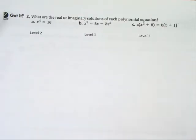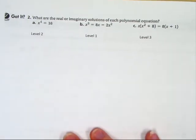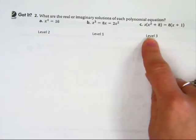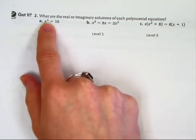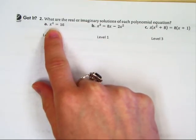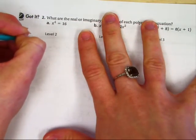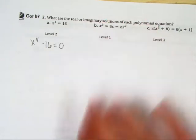And problem got it, number 2. Again, we've got to do the real or the imaginary solutions of the polynomial equation. It's not much different. I have put on different levels. No doubt that part C is the hardest of all of them. So let's start with the level 2. x⁴ equals 16. What we need to do is set it equal to 0. So we're going to take that 16 over, and we're going to get x⁴ - 16 = 0.